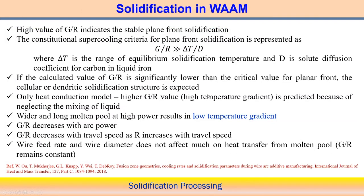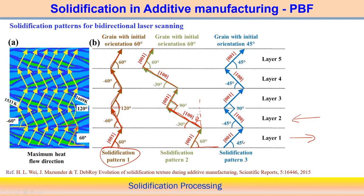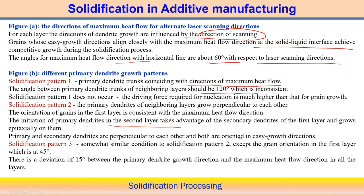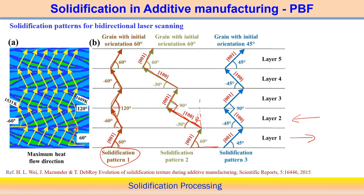In solidification pattern three, the condition is similar to pattern two, except the grain orientation in the first layer is around 45 degrees. If grain orientation is around 45 degrees, the heat flow direction may not be the maximum heat flow direction; instead, easy growth direction ⟨011⟩ is followed, perpendicular to ⟨011⟩ for the next layer.